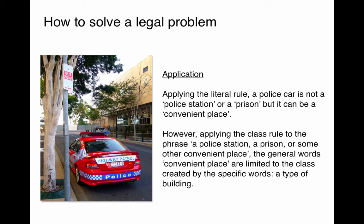In the next section — the A, the application section — we actually start to refer back to the facts of the problem. Applying the literal rule, a police car is not a police station and it's not a prison, but it can, in a literal sense, be a convenient place — it's certainly a convenient place for the police officers. However, applying the class rule to the phrase 'a police station, a prison, or some other convenient place,' we see that we have two specific words followed by a general word. The specific words are police station and prison, and the general words are 'other convenient place.' So a convenient place is not interpreted literally; rather, it is limited to the class created by the specific words. The specific words police station and prison both refer to a type of building, so a convenient place, according to the class rule, must also be a type of building.